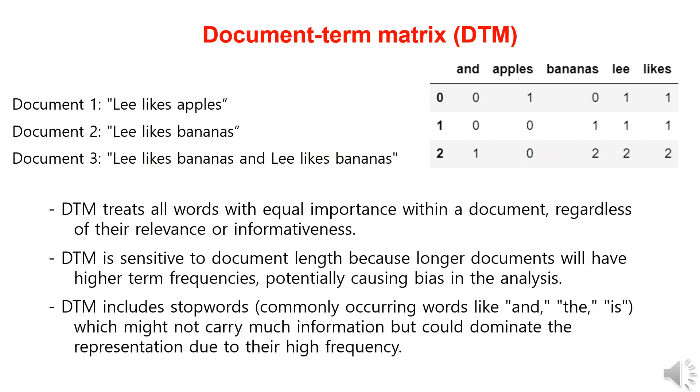The document term matrix treats all words equally, regardless of their relevance or informativeness, or association within the document. Additionally, it's sensitive to sentence length, meaning that as a sentence gets longer, the word frequencies increase, potentially causing bias in the analysis.